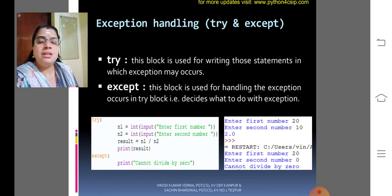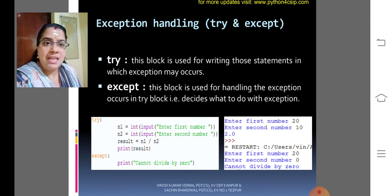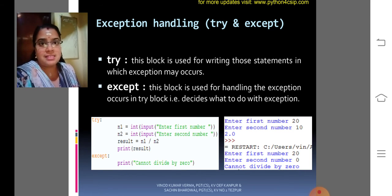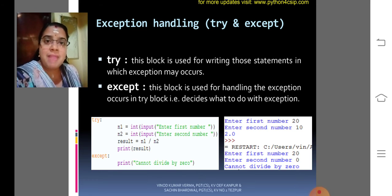The try block is given for the statements. And exception handling that is except is given for catching the errors and displaying the error message. Try block is used for writing those statements in which the exception may occur. That means the errors may occur.